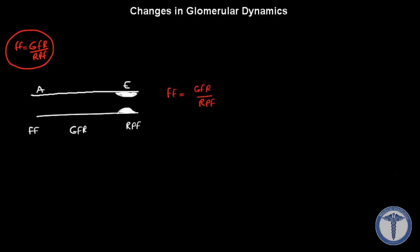Think about efferent constriction as a roadblock. Let's say you're traveling in a car and you see a stop sign or a red light — you're going to decrease your speed. This is basically the same concept. If there is a roadblock, or vasoconstriction on the efferent arterioles, the blood flow — or the renal plasma flow — is going to decrease.